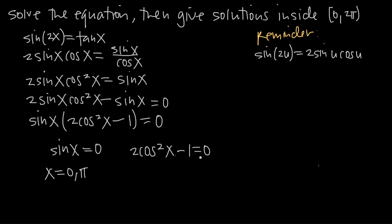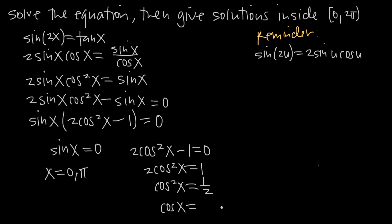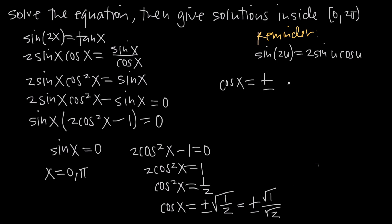For the second equation, we add 1 to both sides to get 2 cosine squared of x equal to 1, then divide both sides by 2 to get cosine squared equal to one half. Taking the square root of both sides, on the left we have cosine of x times cosine of x, so the square root gives us cosine of x. On the right, we get positive or negative square root of one half. Since we can take the square root of the numerator and denominator separately, this equals positive or negative square root of 1 over square root of 2, which simplifies to positive or negative 1 over root 2.